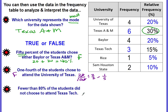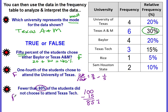Statement: fewer than 80 percent of the students did not choose to attend Texas Tech. How many chose Texas Tech? Looking at the table — Texas Tech is 15 percent. Subtracting from 100 percent gives 85 percent who did not choose Texas Tech. The statement says fewer than 80 percent, so this is false as well.